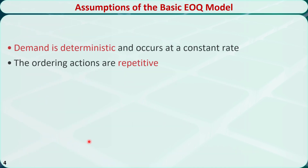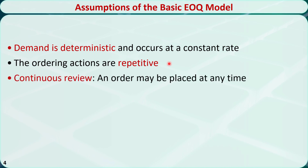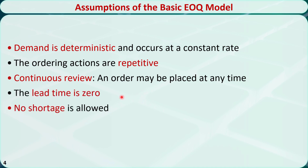The basic EOQ model is the simplest inventory model. It assumes that demand is deterministic and occurs at a constant rate, and that ordering actions are repetitive — orders are placed in a regular fashion. The basic EOQ model is a continuous review model: inventory is monitored all the time and an order can be placed at any time when inventory is low. The lead time — the time between when an order is placed and when it arrives — is zero.